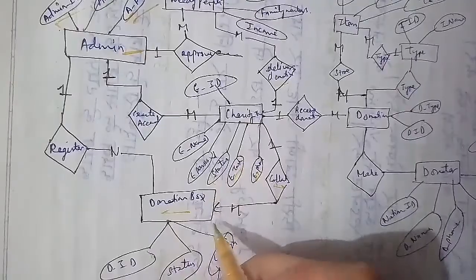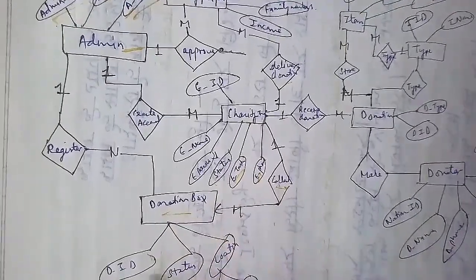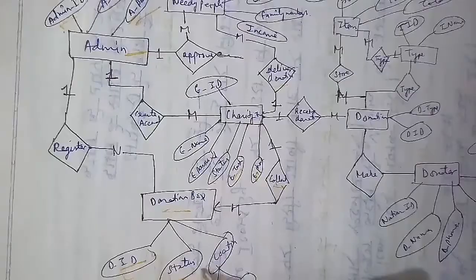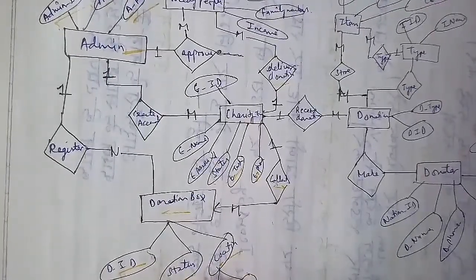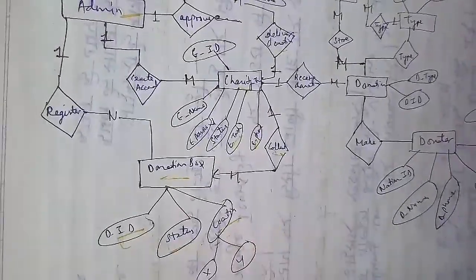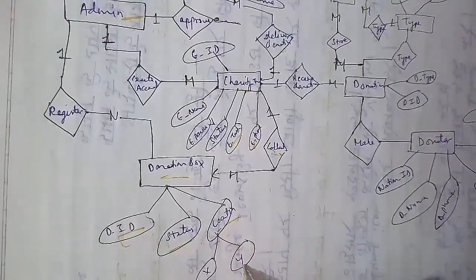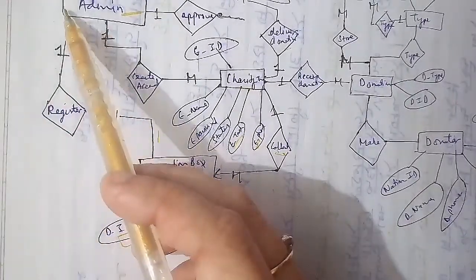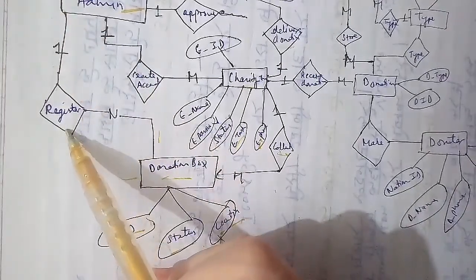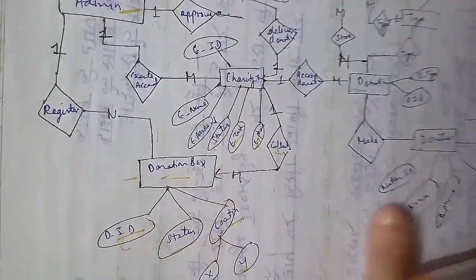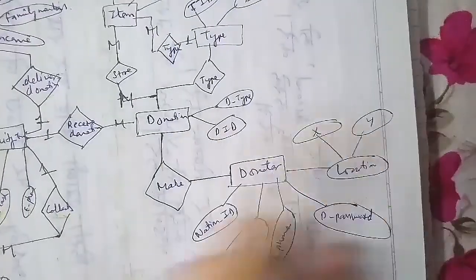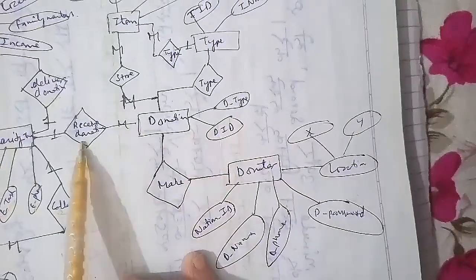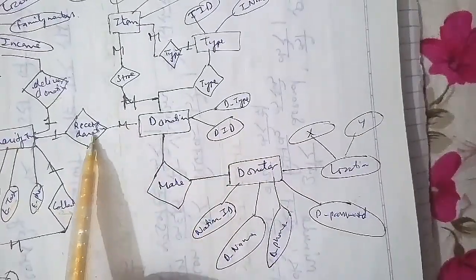The donation entity includes the donation ID, status, and counter. The counter is divided into X and Y categories. After the donation, the gate — which should be registered by admin — is also part of the process. The received donation is connected to the new donation as well.